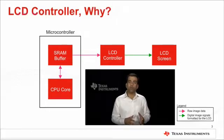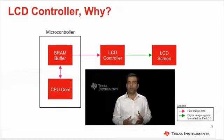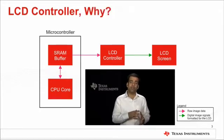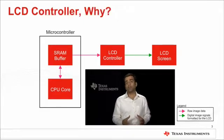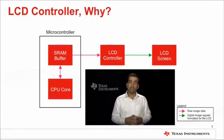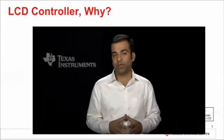A configuration like the one shown on the screen only works for some applications because it has several limitations. Firstly, the CPU core must read every pixel from the SRAM and rewrite it to the LCD controller, which consumes a significant amount of processor bandwidth. Secondly, the SRAM may not be large enough to hold all the image data that you need.